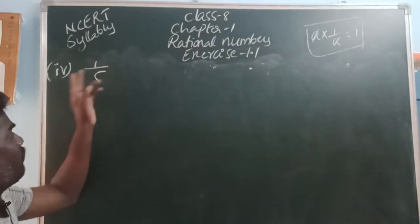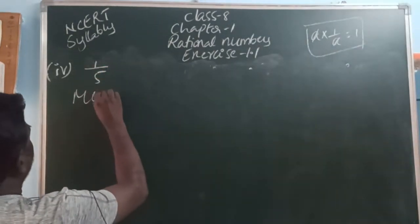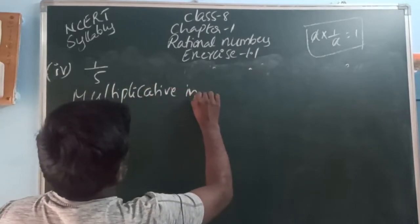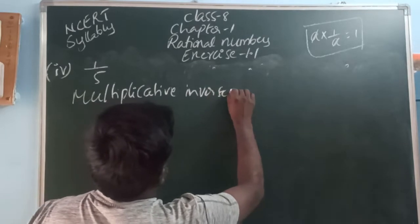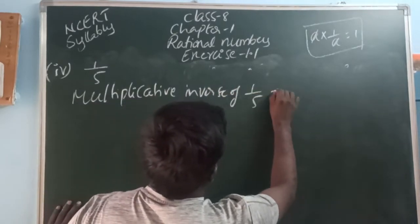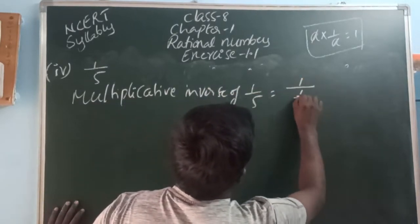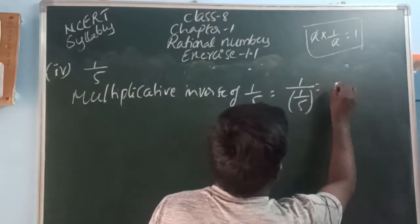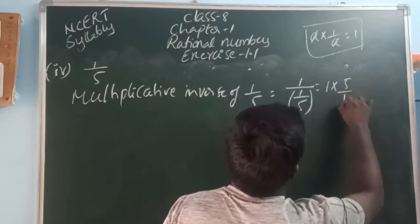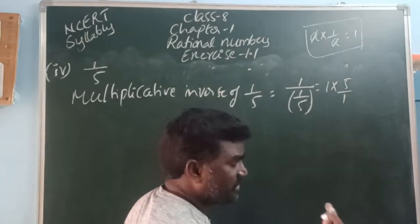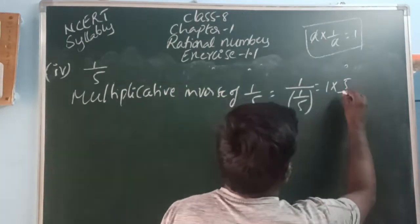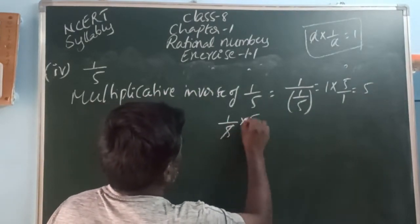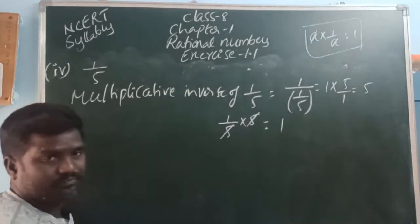Multiplicative inverse of 1 by 5 is 1 divided by 1 by 5. A fraction having a denominator becomes reciprocal, so that is 1 into 5 by 1. Since 1 multiplied by any number gives the same, the result is 5. Verification: 1 by 5 into 5 — the 5 and 1 cancel — giving 1.